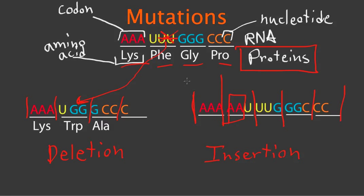And so that's an example of how a mutation can harm people. And these are two different types of mutations: deletion and insertion.